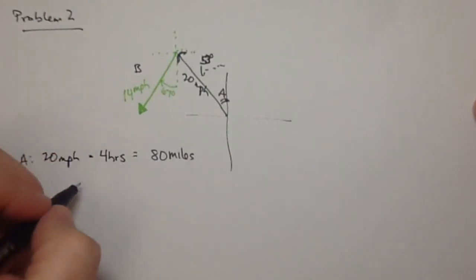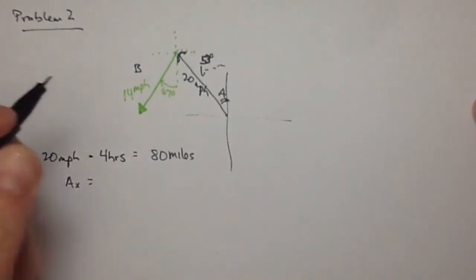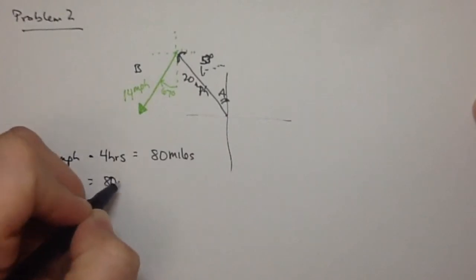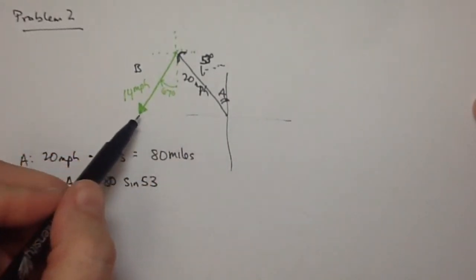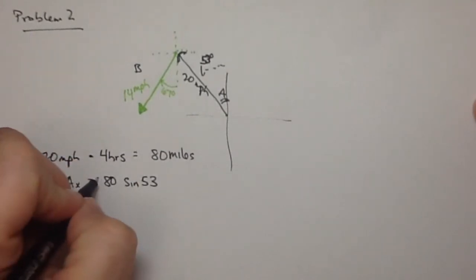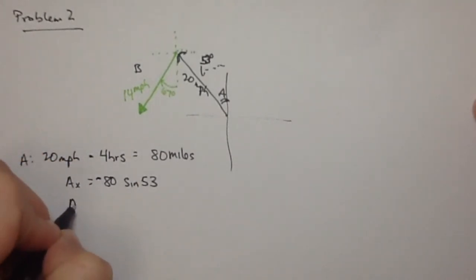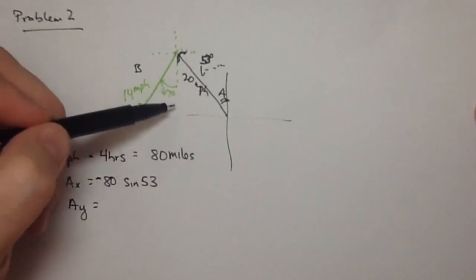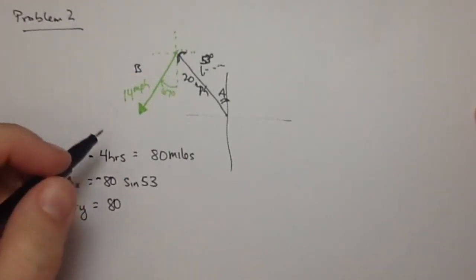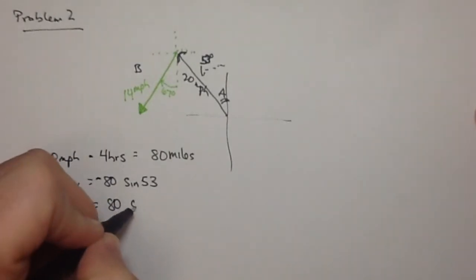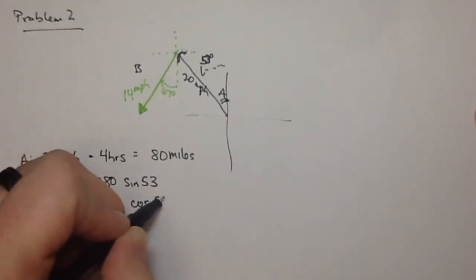So then A_x is going to be 80 times the sine of 53. But because we're going to the left, we're going west, this is going to be negative. And A_y is, we're going north, so it's positive. So this is going to be 80 times the cosine of 53 degrees.